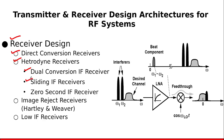In sliding IF receivers, we try to reduce the number of oscillators on the receiver board by deriving the frequency of one stage from the oscillator of another stage. Then we are going to discuss zero IF receivers. All these receiver types are variants of heterodyne receivers. After that, we are going to discuss image reject receivers.